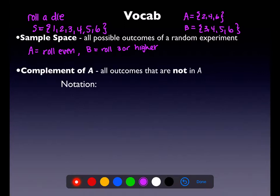If I talk about the complement, it lists all of the outcomes that are not in A. Looking at A, we see that 2, 4, and 6 are in A. So the complement would list all the outcomes that are not in A: 1, 3, and 5.